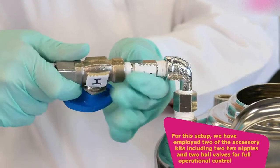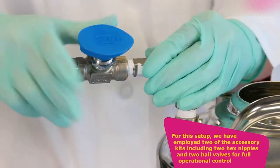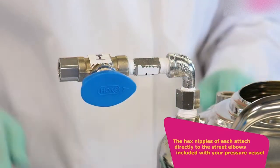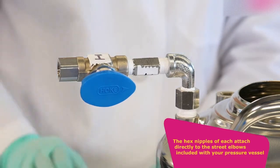For this setup, we have employed two of the accessory kits including two hex nipples and two ball valves for full operational control. The hex nipples of each attach directly to the street elbows, included with your pressure vessel.